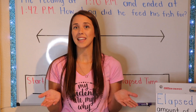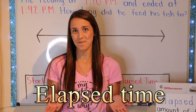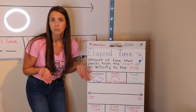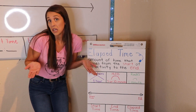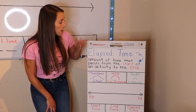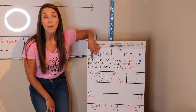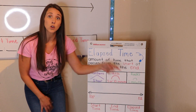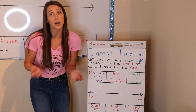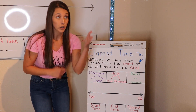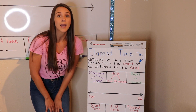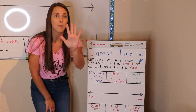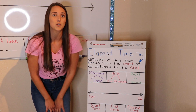Today, we are going to be learning about elapsed time. Elapsed time is the amount of time that passes from the start of an activity to the end. For example, if you wake up in the morning and you brush your teeth — if you started at 8 in the morning and ended at 8:05, it took you a total of five minutes to brush your teeth.